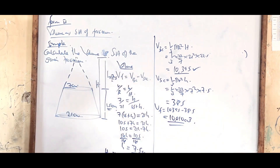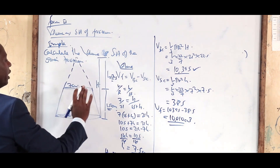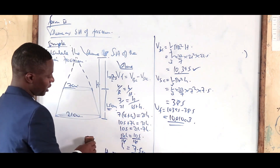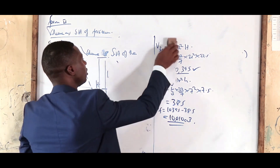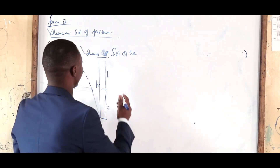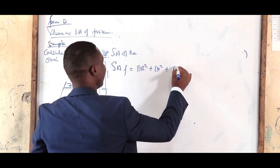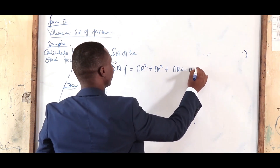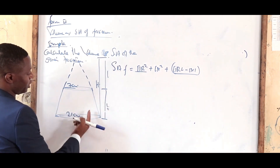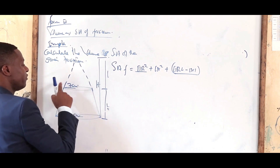That is how you get the volume — the volume of the bigger cone minus the volume of the smaller cone. Now, how do you get the surface area? Since it is a solid frustum, the surface area is given by πR² + πr² + πRL − πrl, where you take the two circular faces and the curved surfaces.